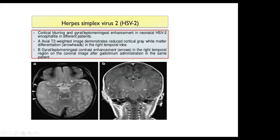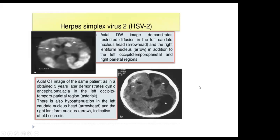A case of herpes simplex type 2: T2 shows hyperintense signal in the right temporal lobe and loss of gray-white matter differentiation. T1 contrast coronal shows leptomeningeal enhancement — a case of meningoencephalitis with both meninges and brain tissue involved. Another case shows diffusion-weighted images with restricted diffusion in the left caudate nucleus head, right lentiform nucleus, and left occipital-temporal-parietal and right parietal regions. Three years later, CT shows encephalomalacia in the left occipital-parietal regions and hypoattenuation in the left caudate and lentiform nuclei indicating necrosis.